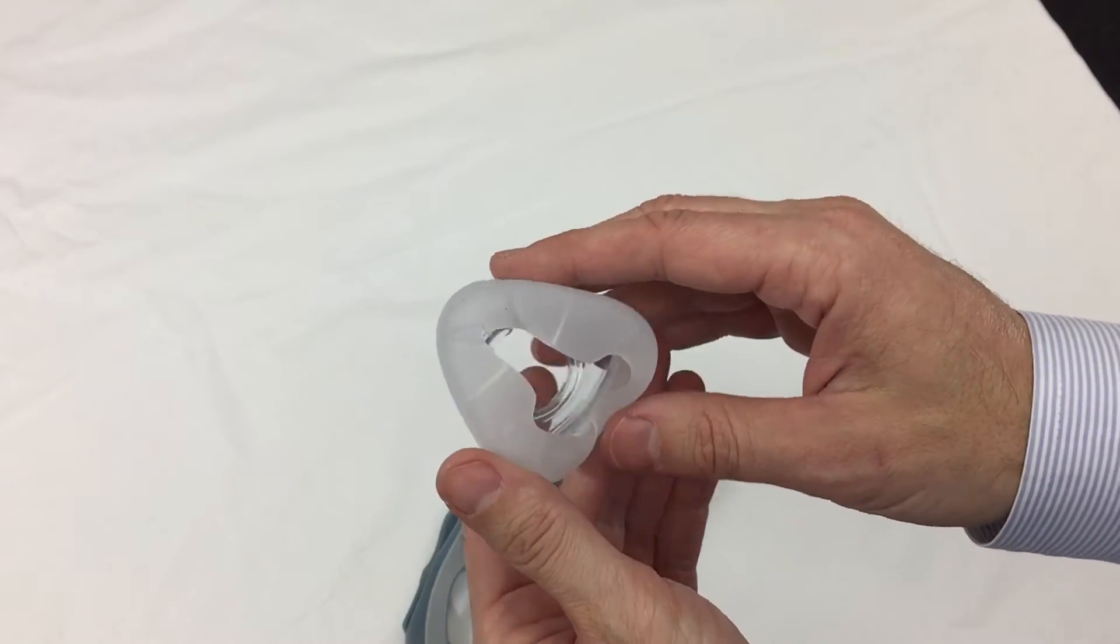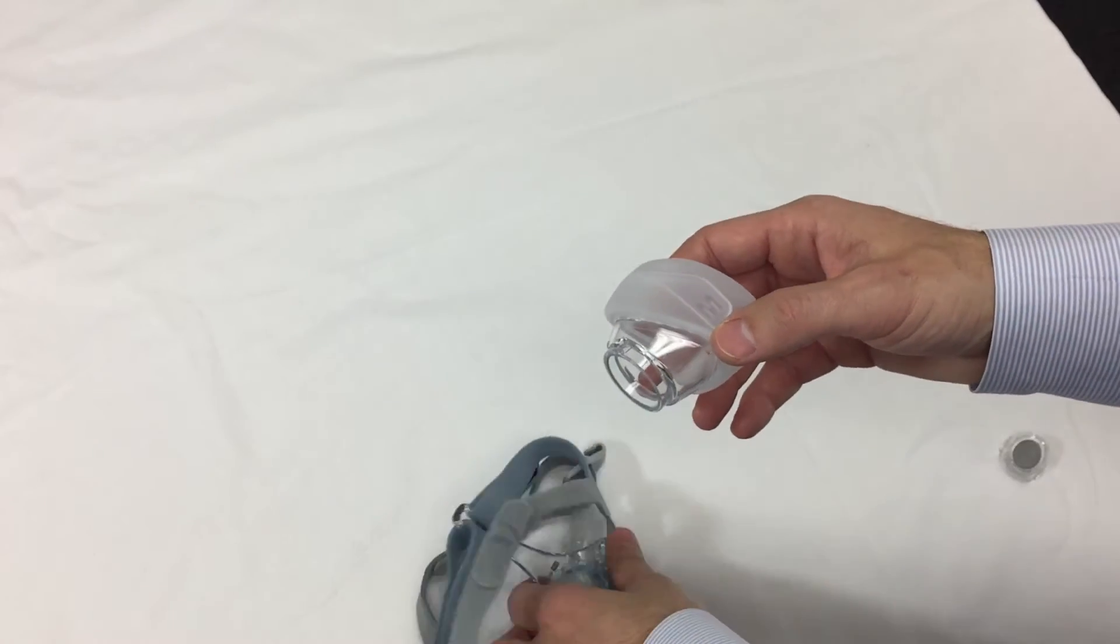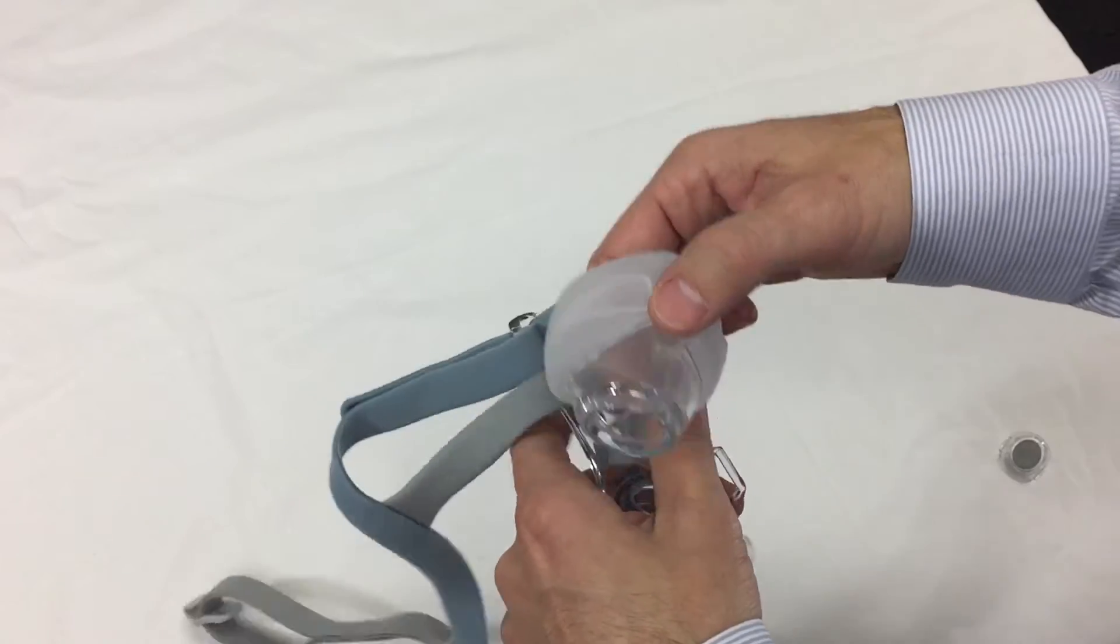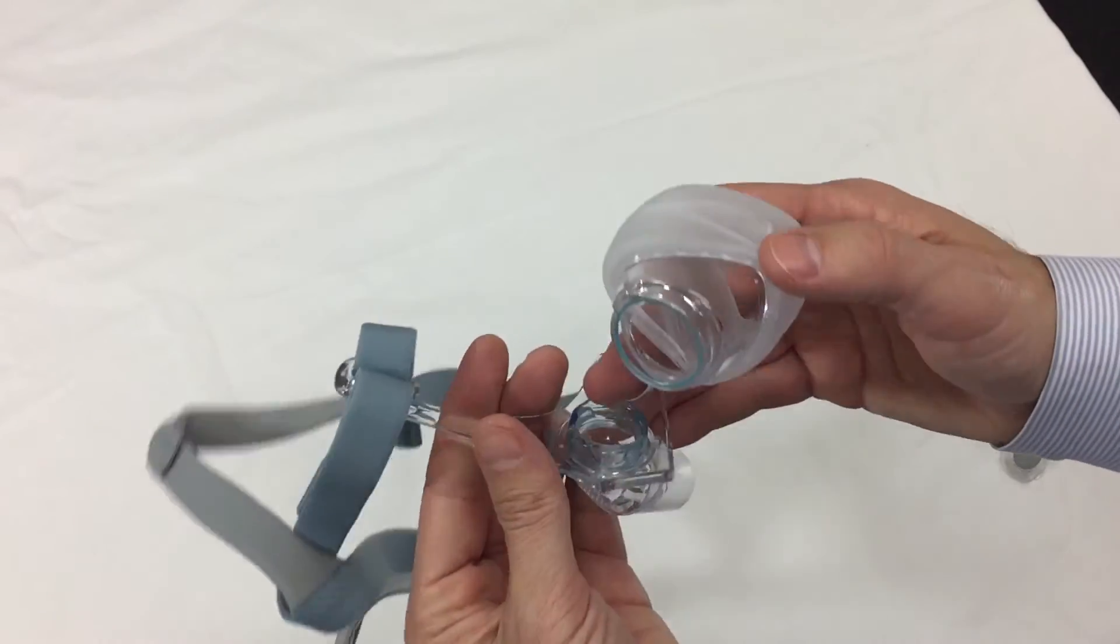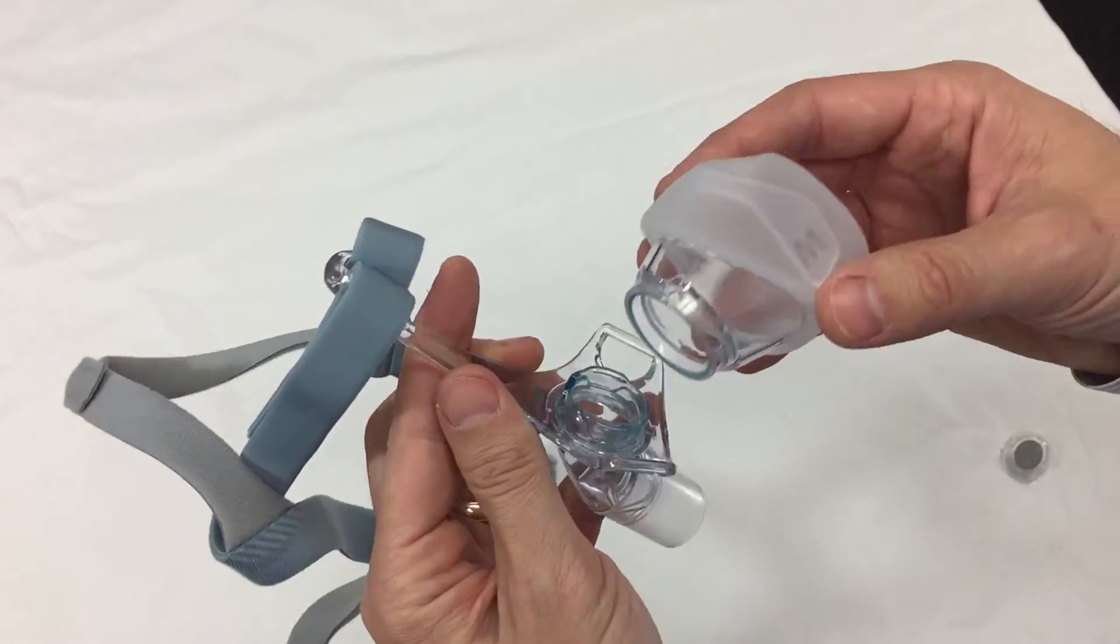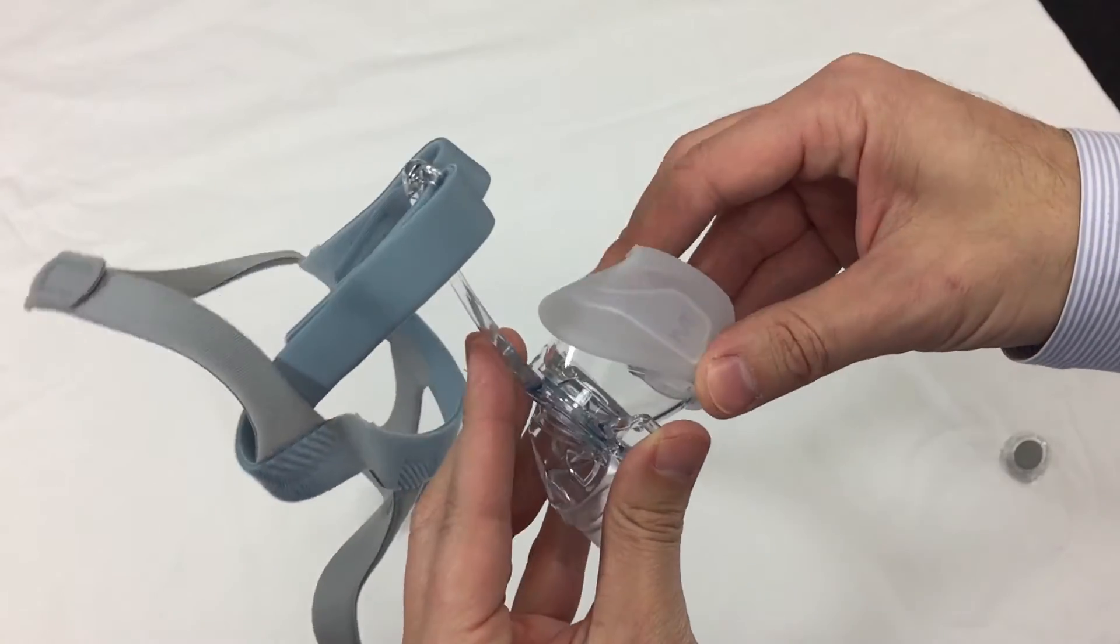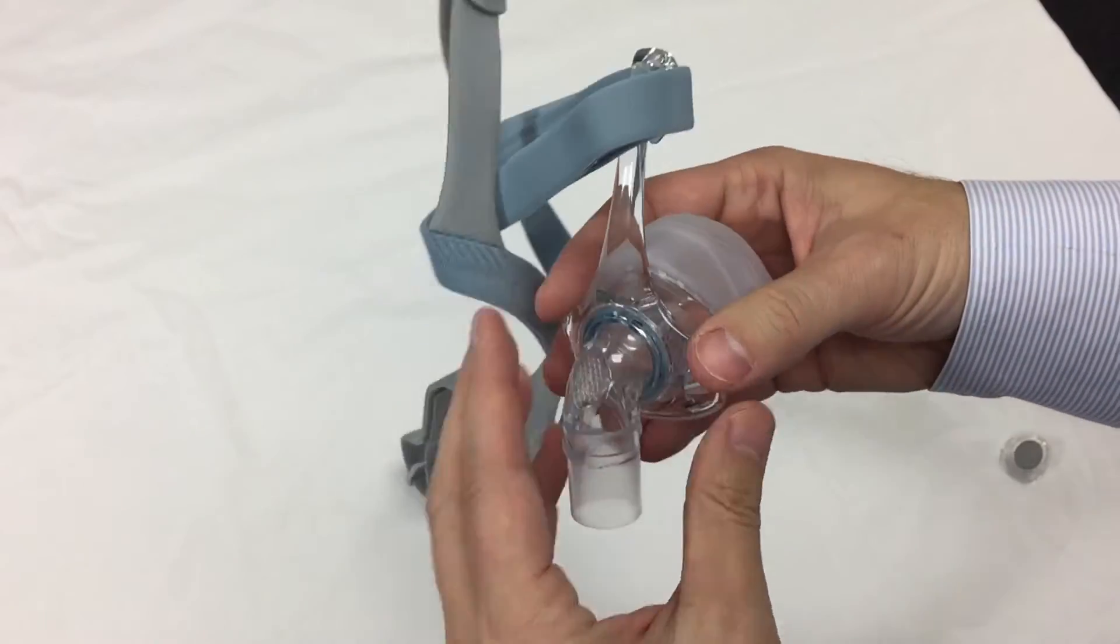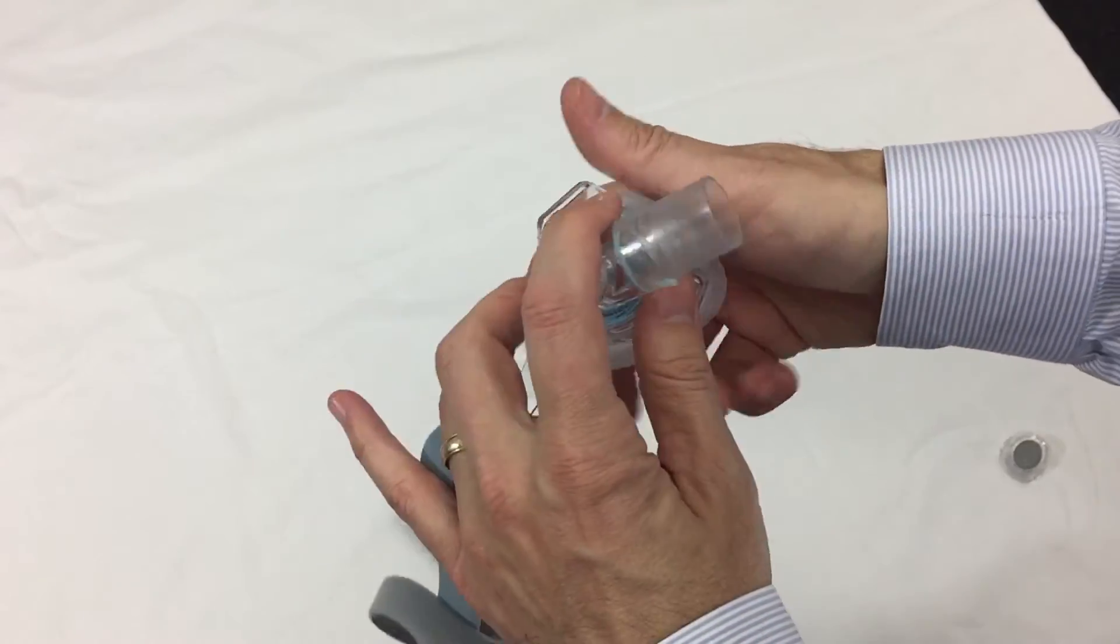It's almost like a crumple zone built into that to allow for some imperfections in your face. Or if you have a mustache, it will seal really well. It's color coded as you can see. There's a slight blue tint on the frame and also the cushion so you'll know where to connect it.